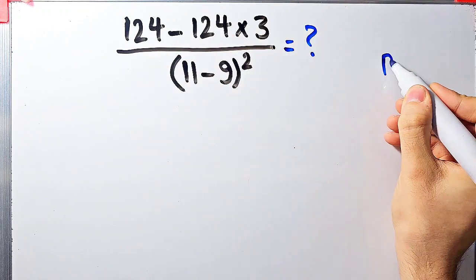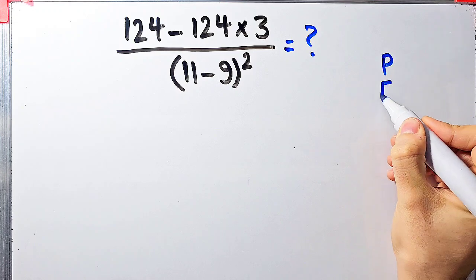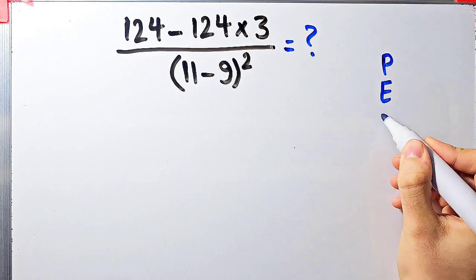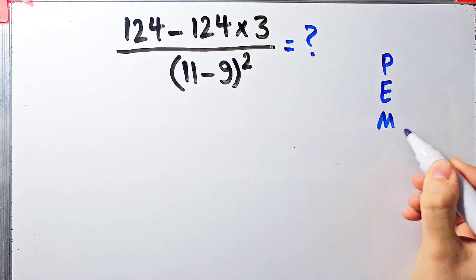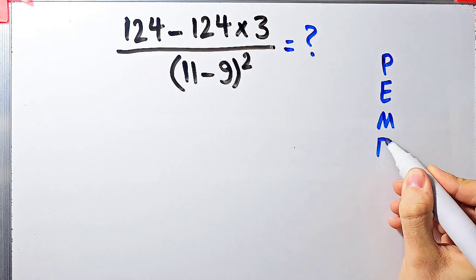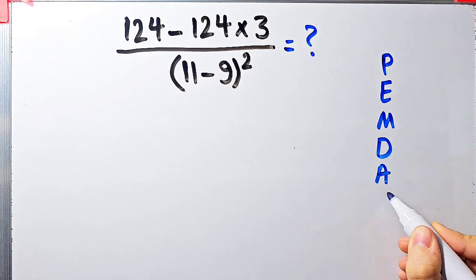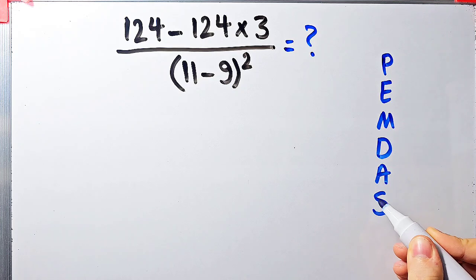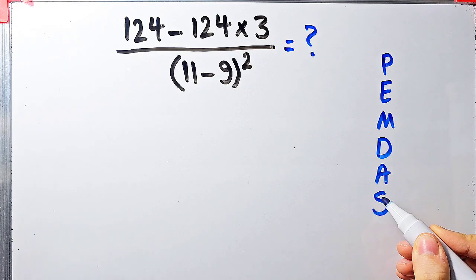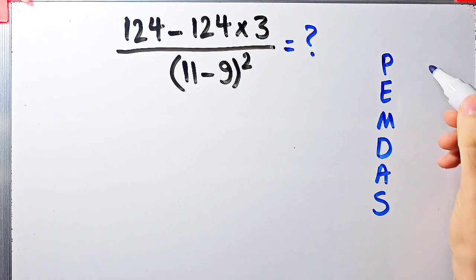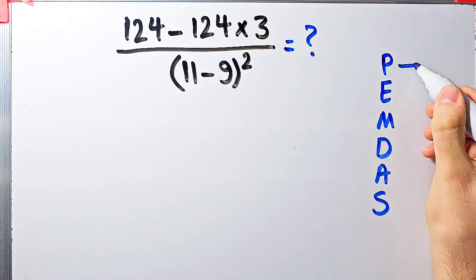In this question we have subtraction, multiplication, division, parentheses, and exponent. To solve this question we need to follow the order of operations, which is PEMDAS. PEMDAS shows the priority of the mathematical operations, and if you don't pay attention to this rule you get the wrong answer.